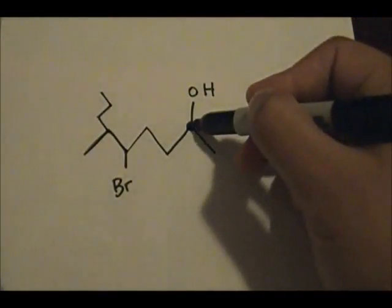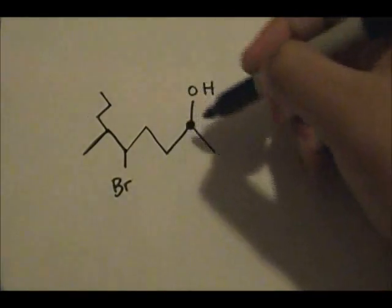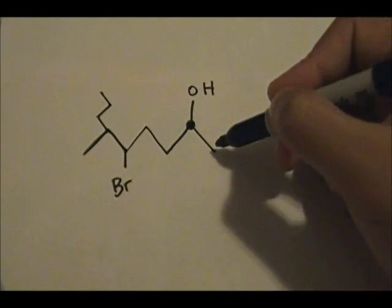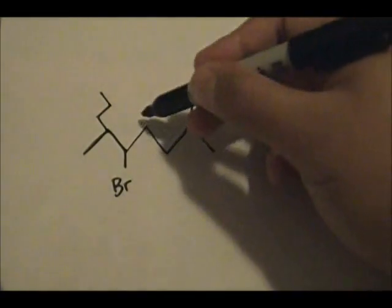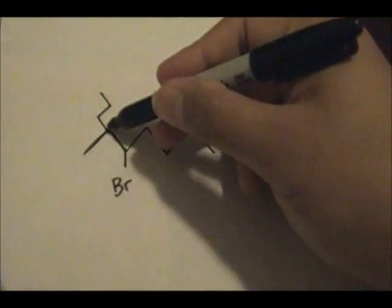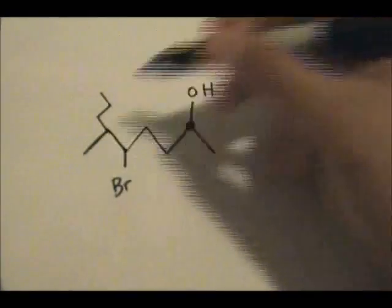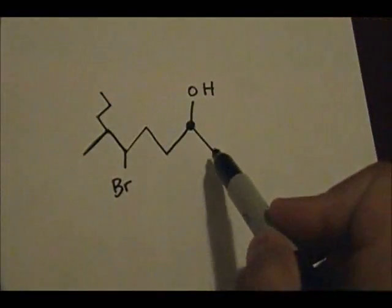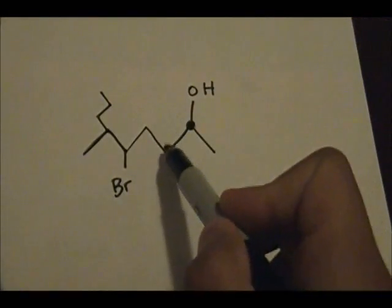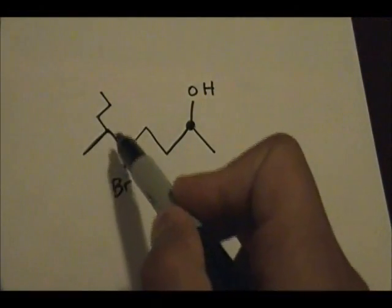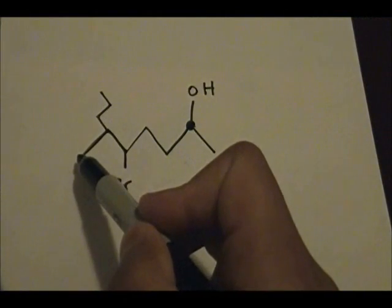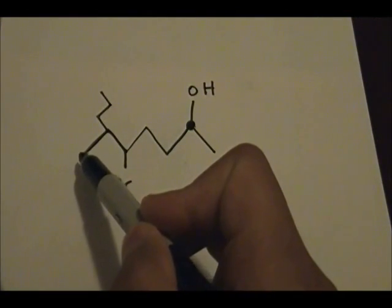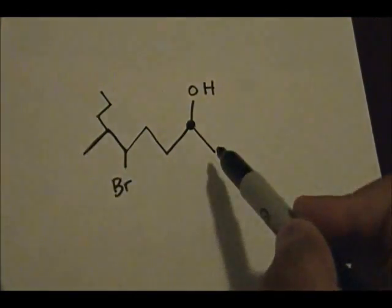This carbon has to be included in the longest chain. We can count one path as seven carbons. That could be one possibility for the parent chain, or we can count another path as nine carbons.